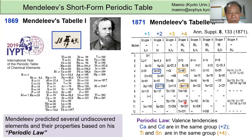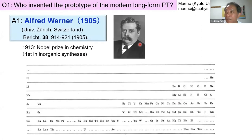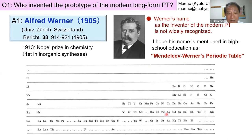Who invented the prototype of the currently used periodic table? This person is Alfred Werner, a very well-known chemist who won the Nobel Prize for coordination theory — the first Nobel Prize in inorganic synthesis. However, his contribution as inventor of the modern periodic table is not widely recognized. I hope his name will appear in high school books as the Mendeleev–Werner periodic table. This is the Mendeleev–Werner periodic table of 1905.